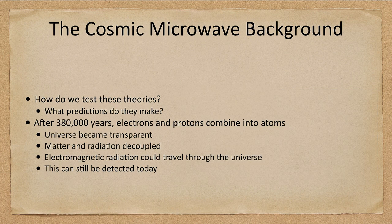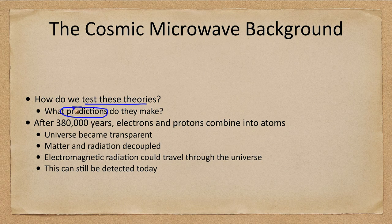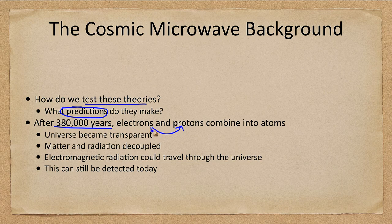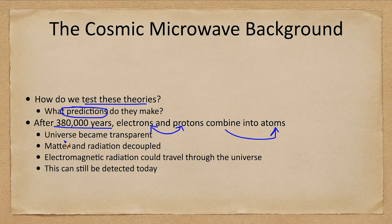So how can we detect, how do we test a theory? Well, we look for what predictions they make and we try to test those predictions. One prediction of the Big Bang theory is that after three hundred and eighty thousand years, electrons and protons could combine and form atoms—hydrogen atoms can form. At this instant, the universe became transparent.